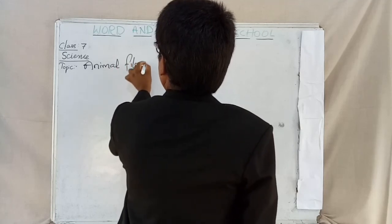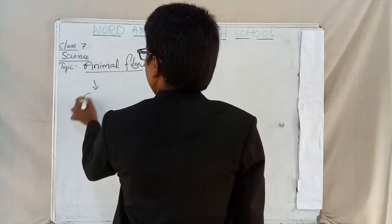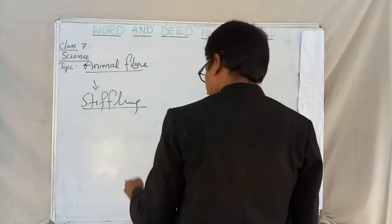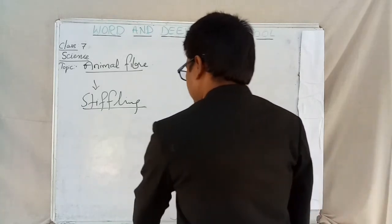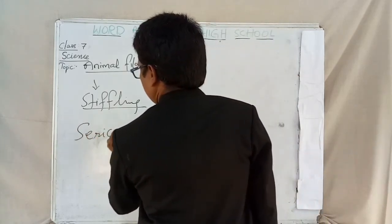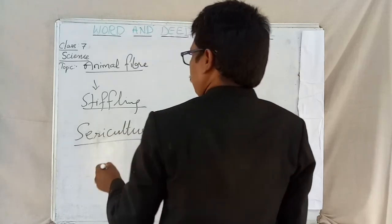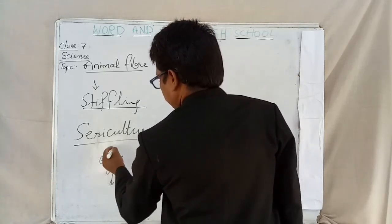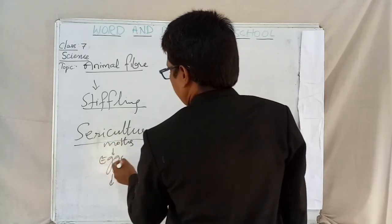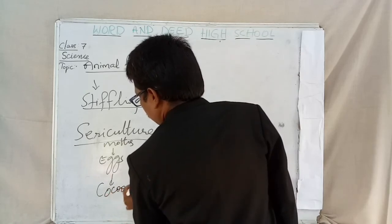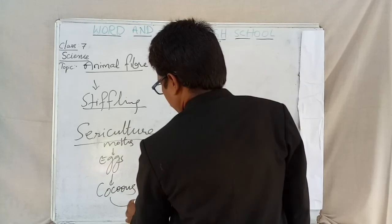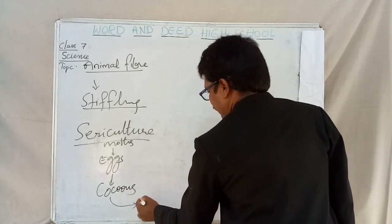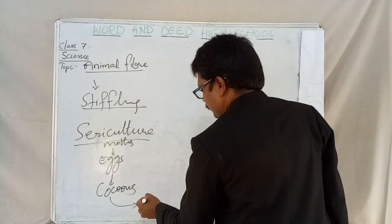Animal Fiber — Stifling. Students, what is stifling? In the sericulture process, first moths lay eggs and eggs become cocoons. After cocoons are formed, the body of the caterpillar is covered by hardened saliva produced by the mouth of the caterpillar.